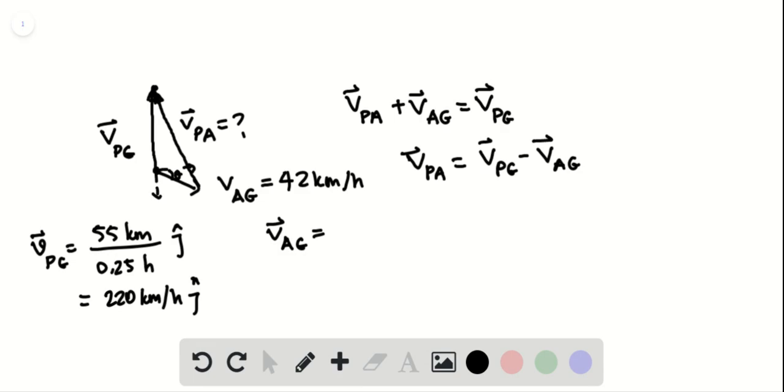The X component of VAG is 42 kilometers per hour times cosine of 20 degrees in the positive X direction.